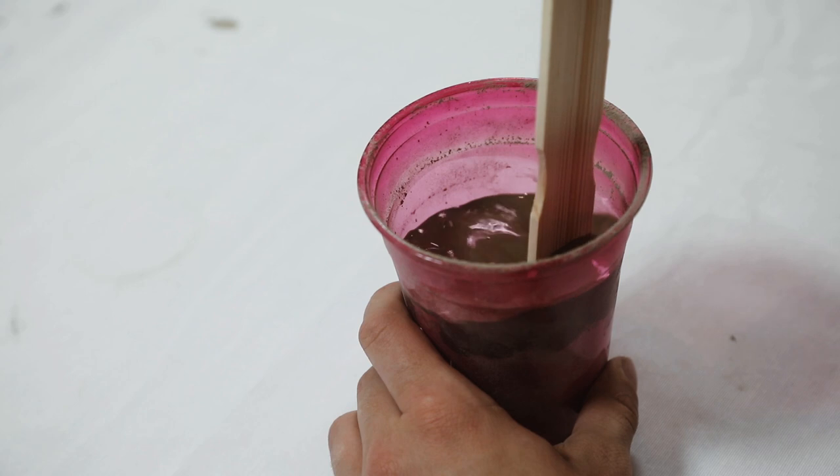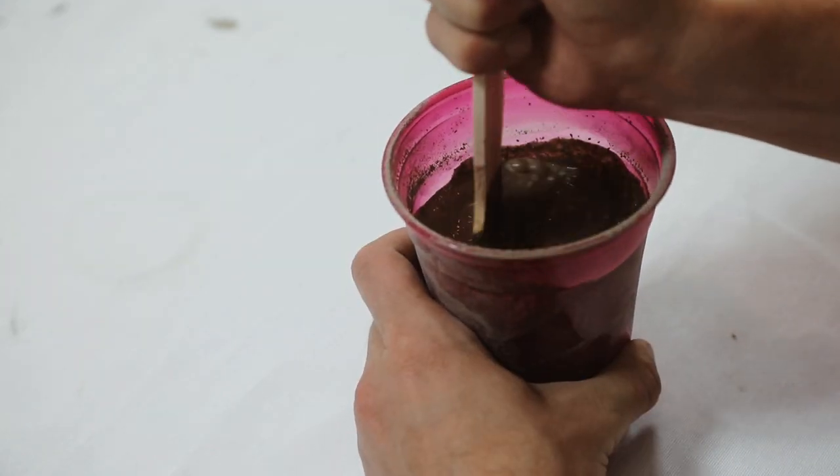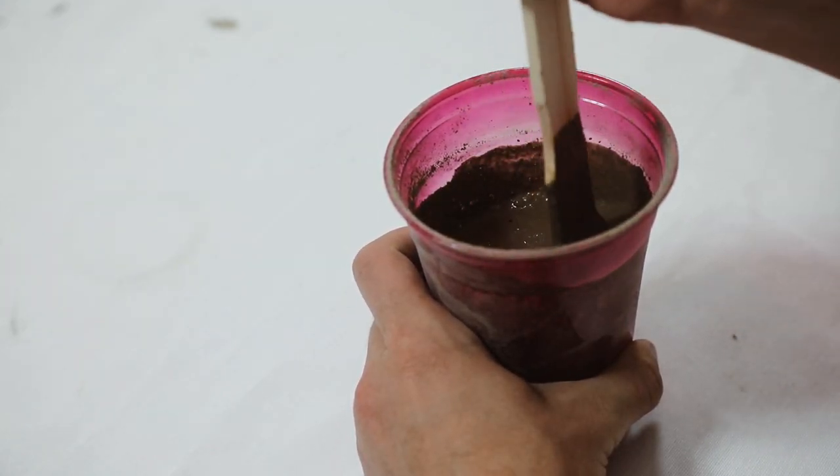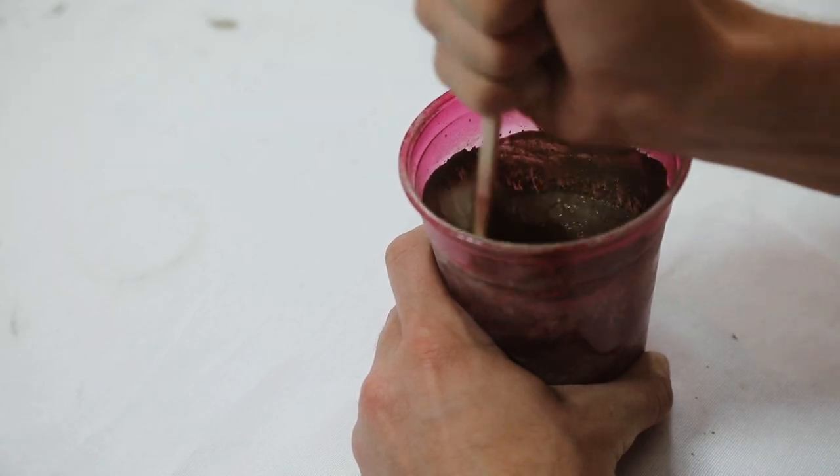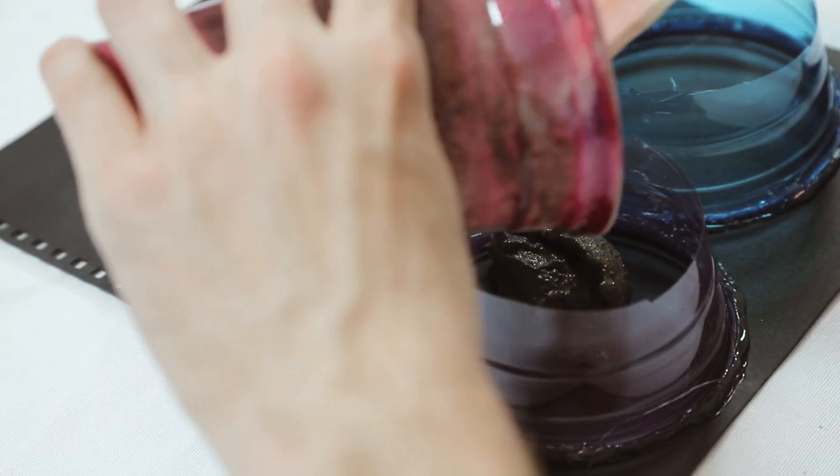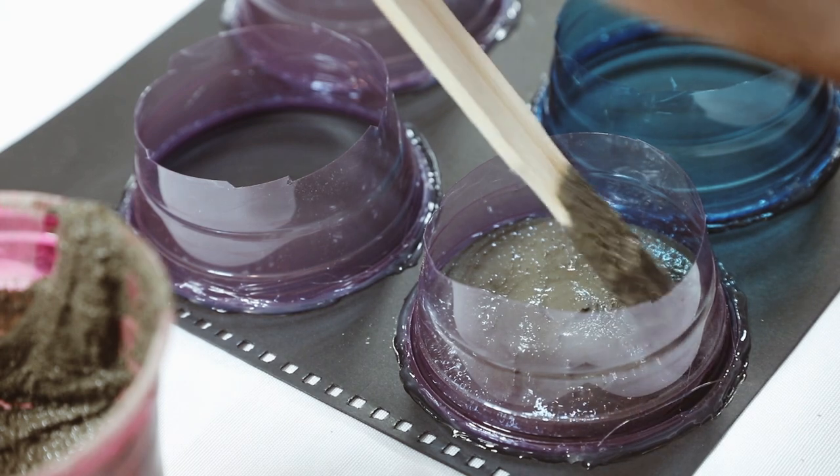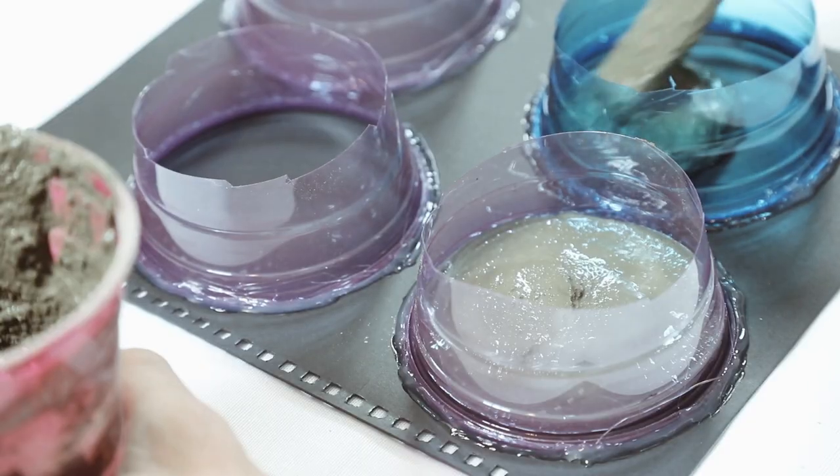Then I mixed up my sifted concrete with a little bit of water into a nice good concrete consistency, and I just dolloped it inside each of those molds and used my stick to maneuver it around. And then of course you can also tap it up and down on the table just to relieve any air bubbles and make sure that the concrete is filling in the entire mold.